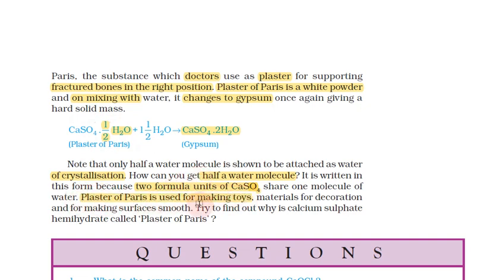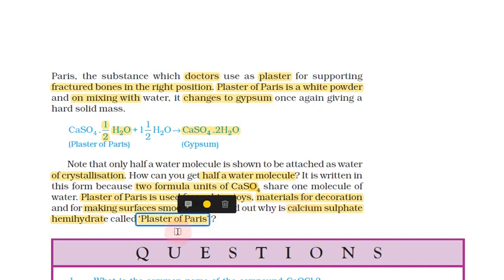Plaster of Paris is used for making toys, materials for decoration, and for making surfaces smooth. It is made from calcium sulfate hemihydrate.